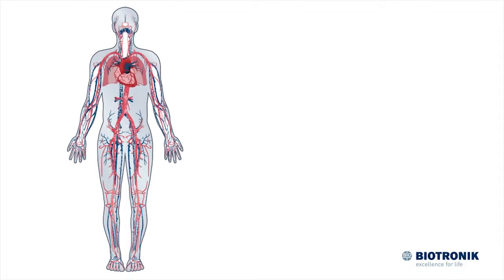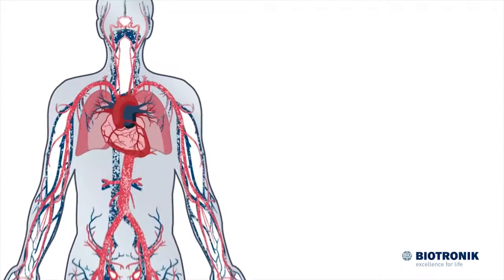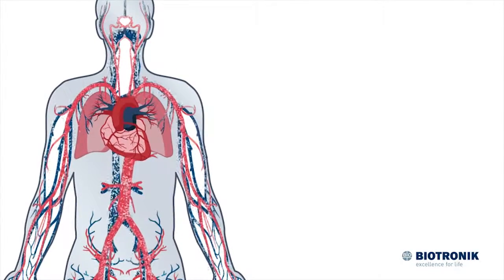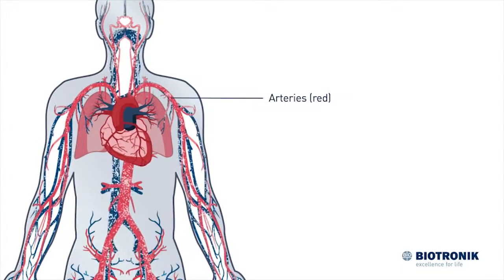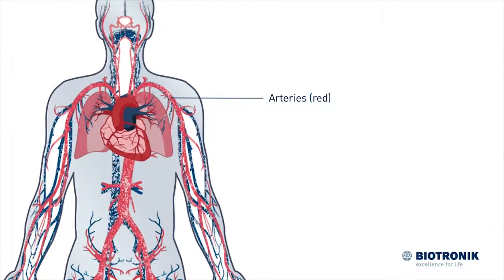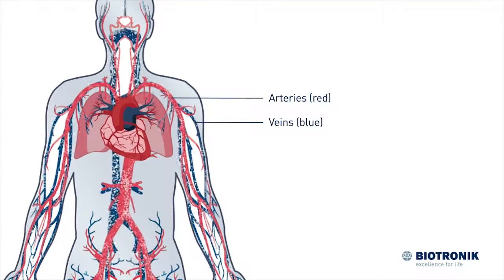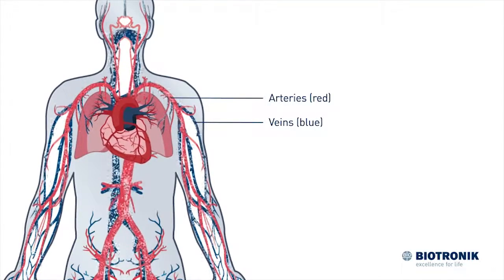The bloodstream provides our bodies with oxygen and vital nutrients. The blood flows from the heart to the organs through the arteries, shown in red, and it flows back to the heart through the veins, shown in blue.